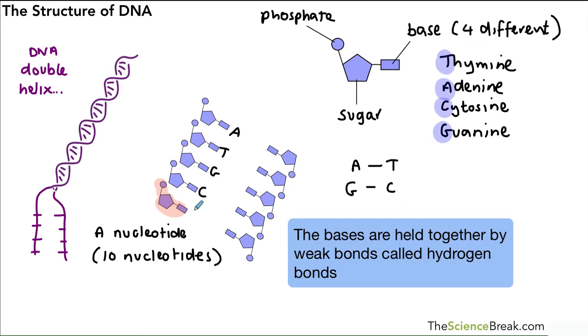But the rule is that A always pairs with T, and G always pairs with C. So what's going to be on the other strand of DNA? Well, opposite the A is going to be a T, opposite the T will be an A, opposite the G will be a C.